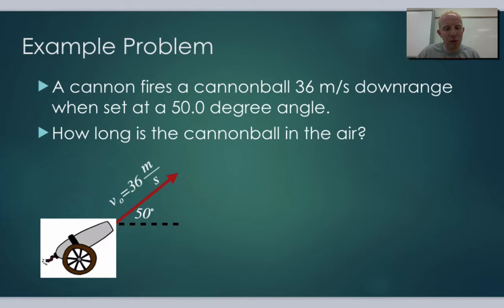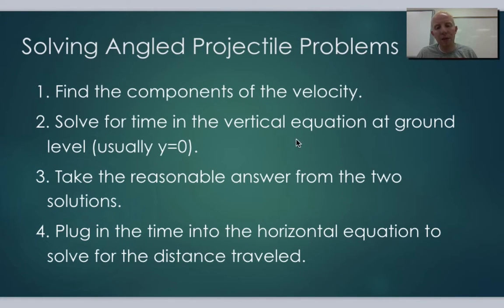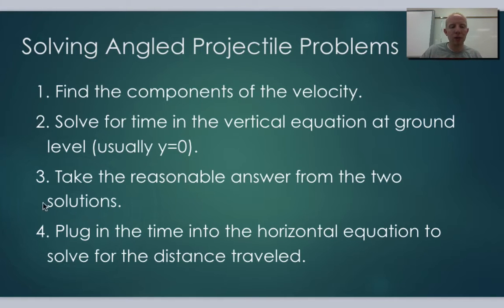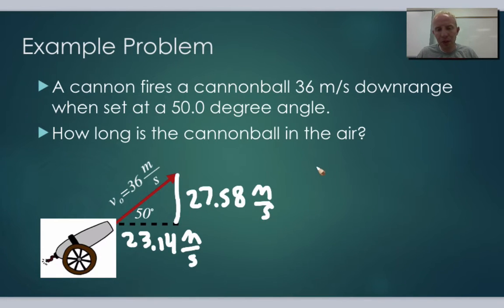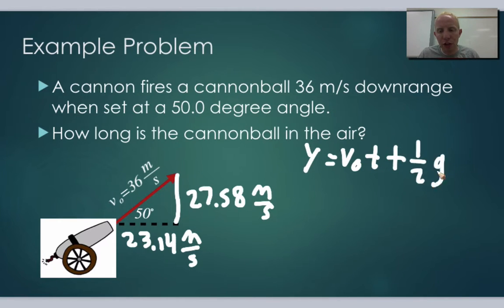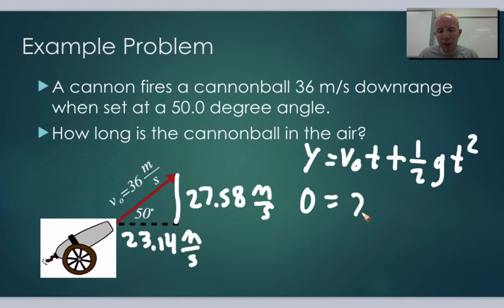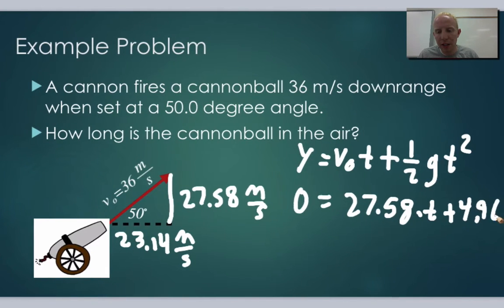Next step: solve for time in the vertical equation at ground level, y equals 0. If the cannonball is landing on the same level ground — not off a cliff — we use y equals 0. Using y equals v₀y·t plus ½gt², with y equal to 0, v₀y equal to 27.58, and ½g equal to 4.9, we get: 0 equals 27.58t plus 4.9t².